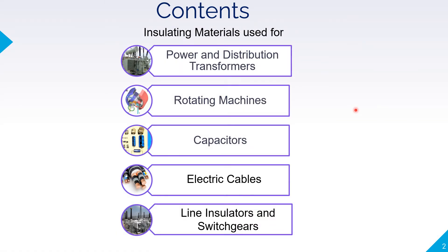Contents of the session are insulating materials used for power and distribution transformer, rotating machines, capacitors, electrical cables, line insulators, and switch gears. Today we are going to see applications of different types of insulating materials for various devices.